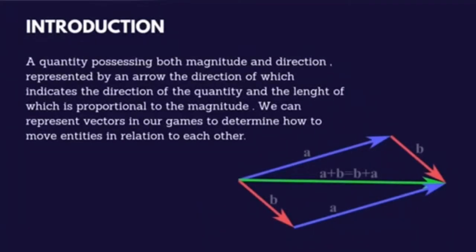Introduction. A quantity possessing both magnitude and direction, represented by an arrow, the direction of which indicates the direction of the quantity and the length of which is proportional to the magnitude. We can represent vectors in our games to determine how to move entities in relation to each other.